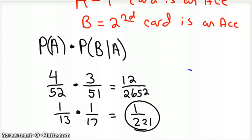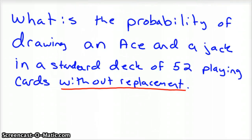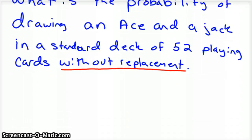All right, so let's give you another problem. What is the probability of drawing an ace and a jack in a standard deck of 52 playing cards without replacement? Again, we're going to pull a card out, stick it in our pocket or lay it on the table, and then have another card dealt to us or draw another card out of the deck. So that's what the without replacement stands for.